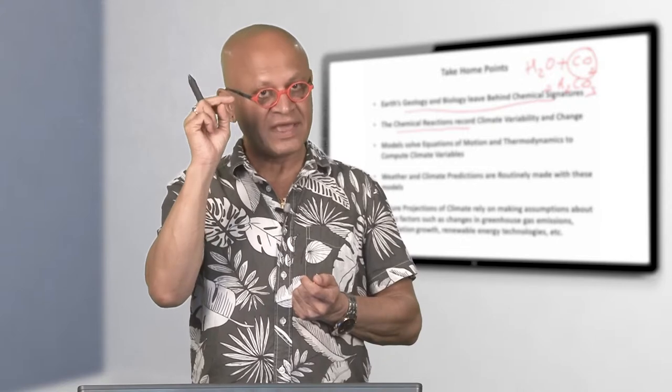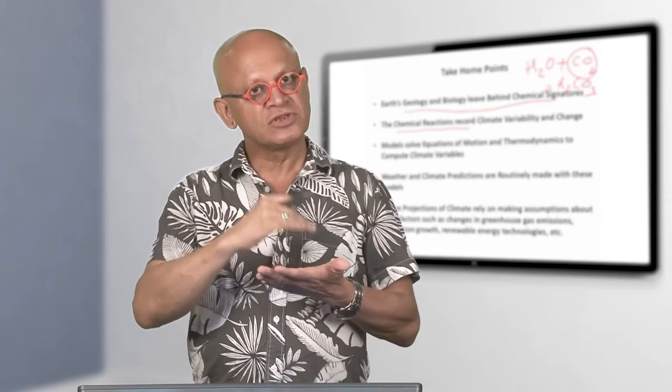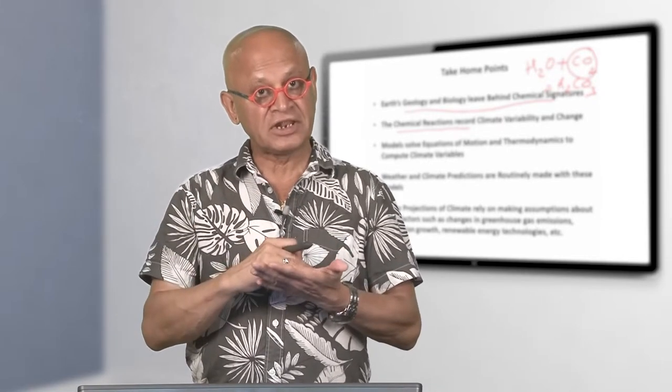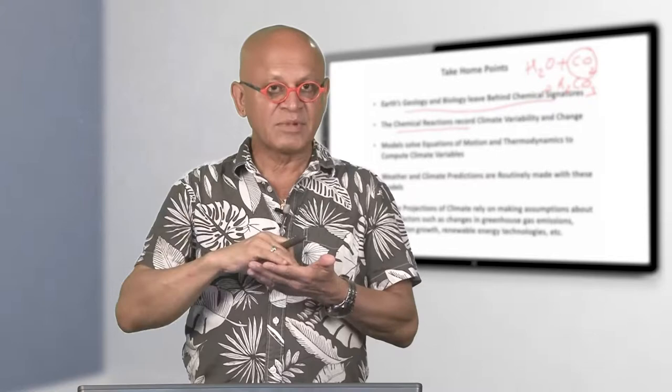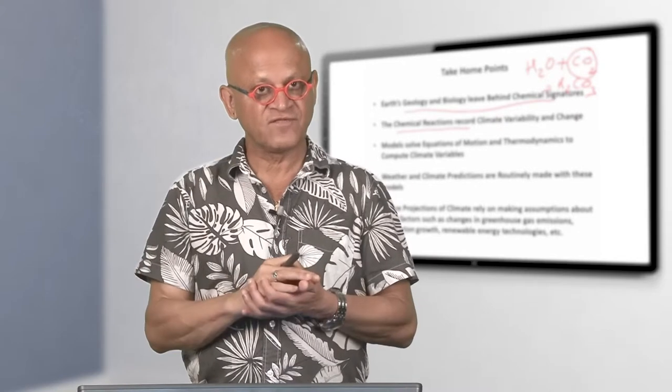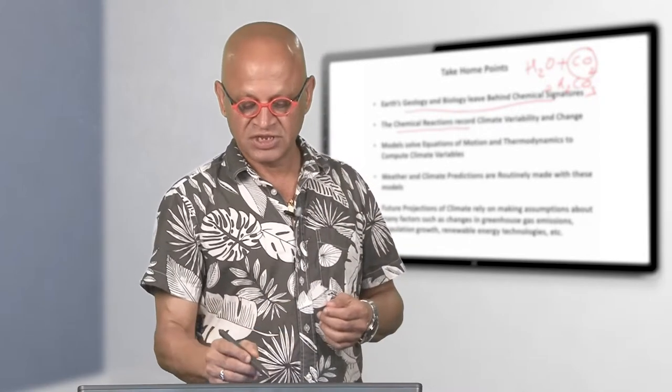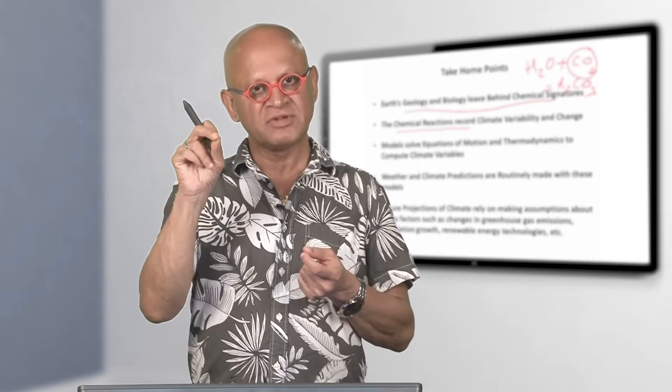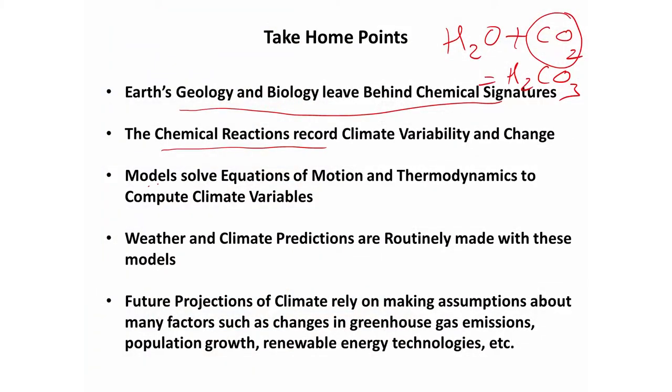The chemical reactions record climate variability and change. Corals have striations or layers that can be as finely resolved as a week. If you have few years of coral data you can look at the data and can infer monsoon variability over the Holocene, El Niño variability over the Holocene. We haven't defined what El Niño is, we will do that later, but I'm sure some of you have heard about it. It's not just trends or climate change over hundreds and thousands of years but even the ups and downs of things like the monsoon that can be found via these bio-geochemical signatures. This is a very key phrase: bio-geochemical, because biology is involved and geochemistry is involved to produce these proxies for climate variability and change.